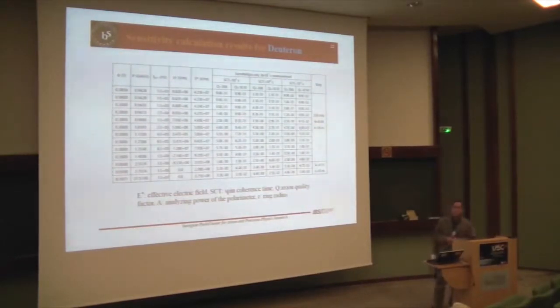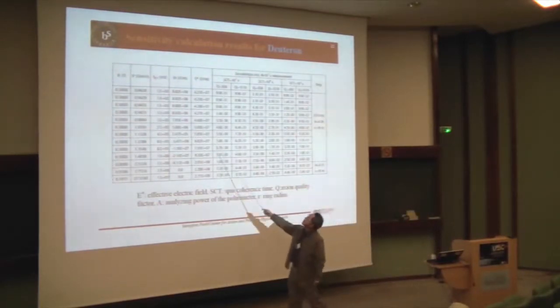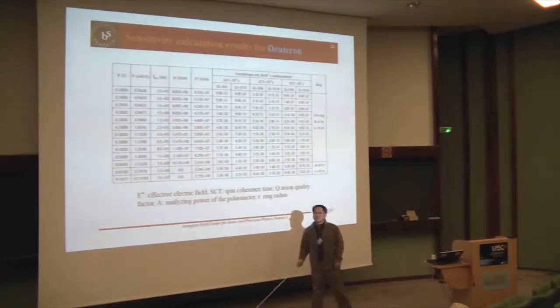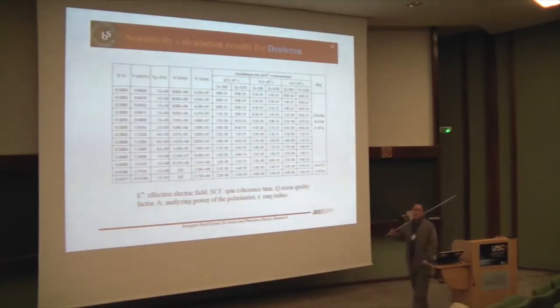Now, this is the sensitivity, calculation result. Some people in this room, noticed, 10 to the minus 32, e-centimeter. That's because, you use very many particles. This assumes, four years of measurement, that means, eight times 10 to the seven seconds, measurement, with a very high, effective electric field. This is real electric field, about megavolt. You see this one? You cannot produce this electric field. But, this is, actually, available electric field, effective electric field. That gives you, this very high sensitivity.